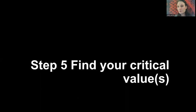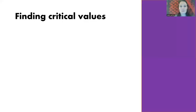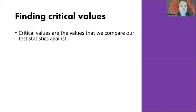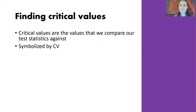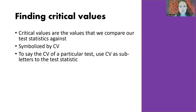Step five is to find our critical value or values. We use the area under the curve, or z critical value table, from when we solved area-under-the-curve problems. We compare the test statistic to our critical values to help us make a decision. The symbol for critical value is capital C, capital V. For the one-sample z-test specifically, we write Z sub CV. We'll draw a normal curve, label our critical value, label zero at the center, and label the different decisions relative to the null hypothesis.